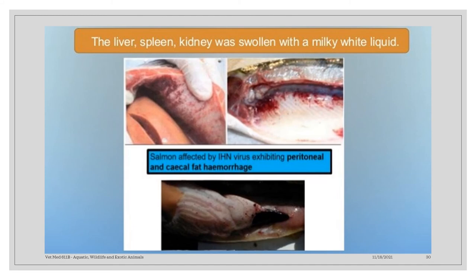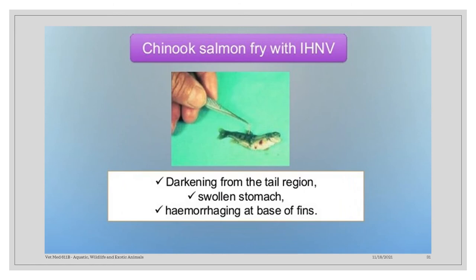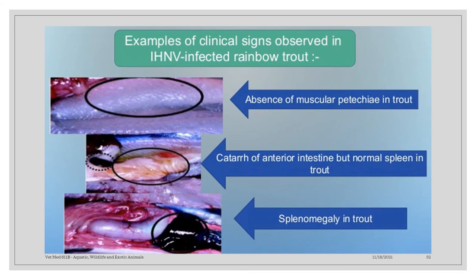Salmon infected by IHN virus exhibit peritoneal and cecal fat hemorrhage. In Chinook salmon fry with IHN virus, there is darkening from the tail region, swollen stomach, and hemorrhaging at the base of the fins. These are examples of clinical signs observed in IHNV-infected rainbow trout, including absence of muscular petechiae in trout, presence of catarrh or mucus in the anterior intestine, normal spleen, and splenomegaly in trout.